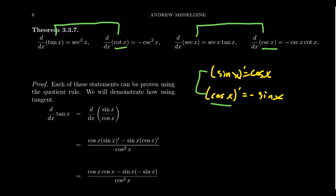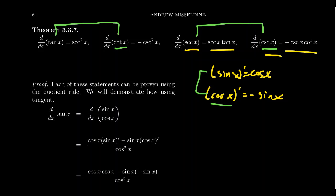The derivative of tangent is secant squared. The derivative of cotangent is negative cosecant squared. So if you slap a 'co' in front of tangent, you're going to slap a 'co' in front of the secant but you also get a negative sign. Consider also the derivative of secant — it's secant times tangent. But the derivative of cosecant is negative cosecant cotangent. You just put a 'co' in front of each function and add an extra negative sign. That's how they're related.